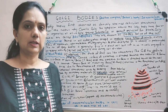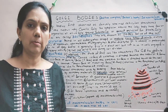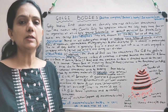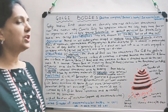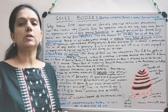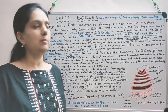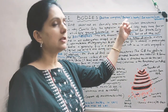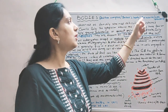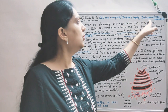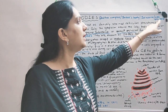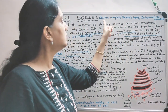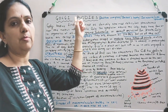It is a cell organelle which is single membrane bound. Now this Golgi body is called by varied names. It can be called as Dalton complex, it is also called Baker's body, you can call it idiosome, or it can also be called as lipochondria. So these are the different names for Golgi body.